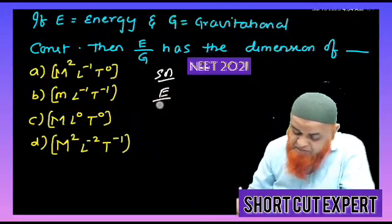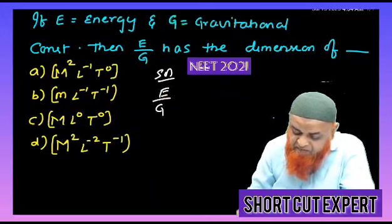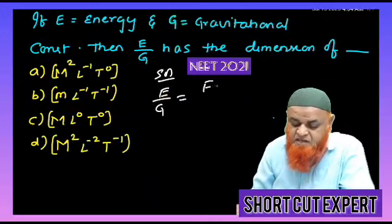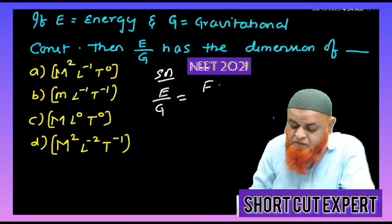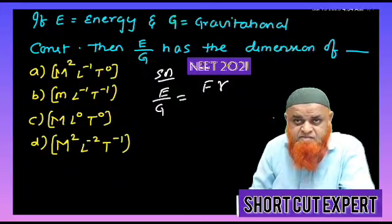So energy is considered to be E and gravitation can be taken as G here. Energy means force into displacement. Let us take displacement as R.